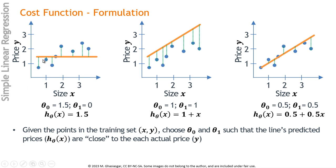Some errors go up and some go down. For instance, if I summed up all these errors, the positive errors may cancel the negative errors — but that doesn't mean the line is a good fit. It just means that some errors are positive and some are negative. So the sum of errors is not a good measure of how well the line fits; we'll have to use some other measure.